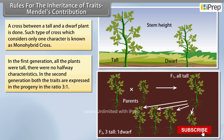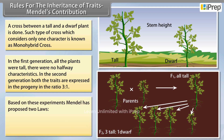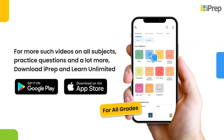In the second generation, both traits are expressed in the progeny in a ratio of three to one. Based on these experiments, Mendel proposed two laws: the Law of Dominance and the Law of Segregation.